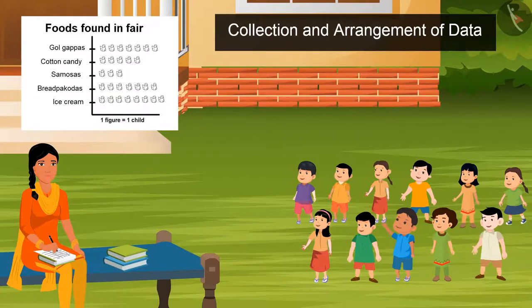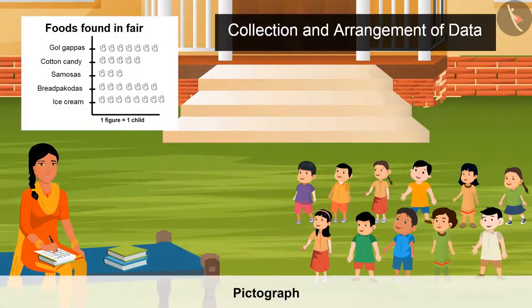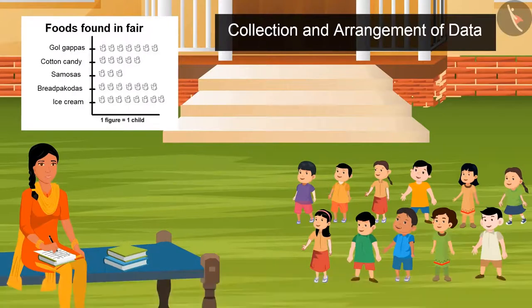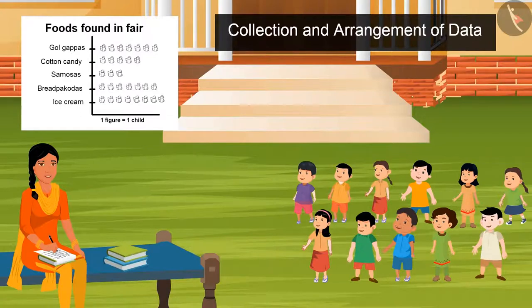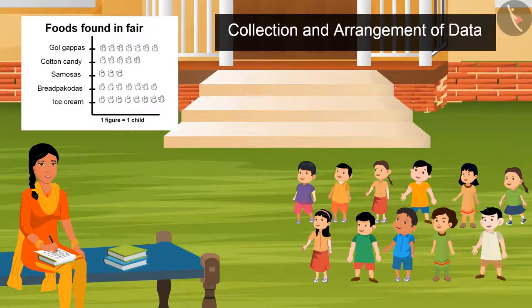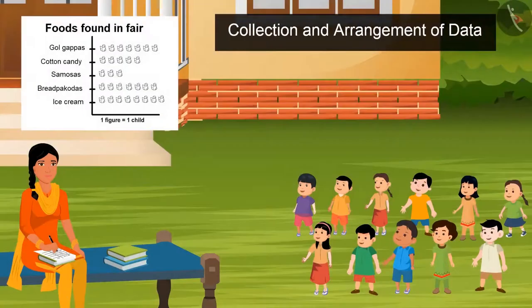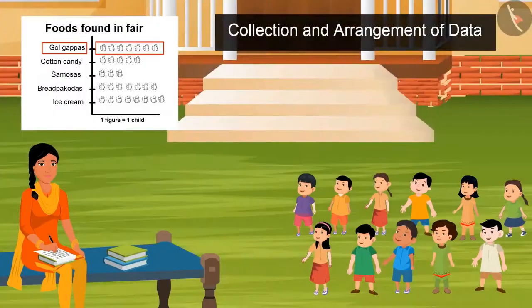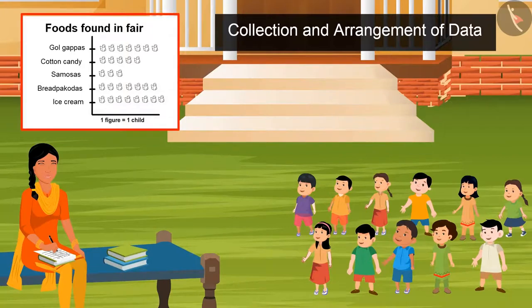Sister, what have you made? Look, this is known as a pictograph. In this, with the help of pictures, I have shown the number of kids with their choices of food. By closely looking at this pictograph, tell me which food is highly chosen by the kids? Ice cream. Absolutely right.